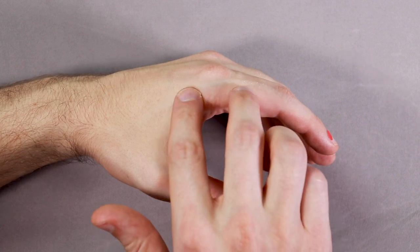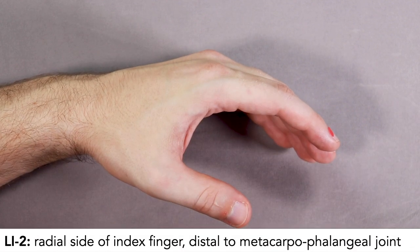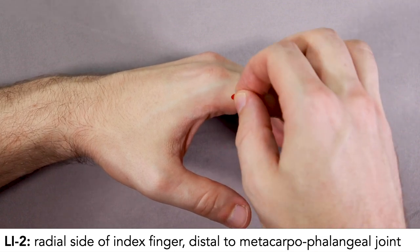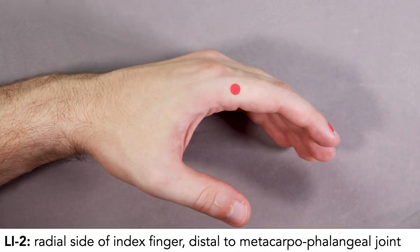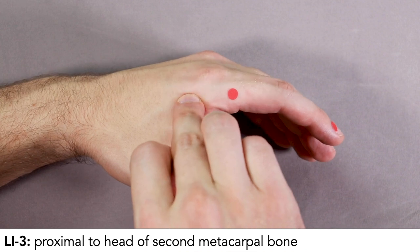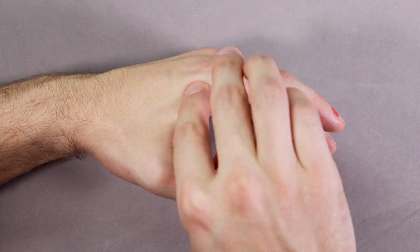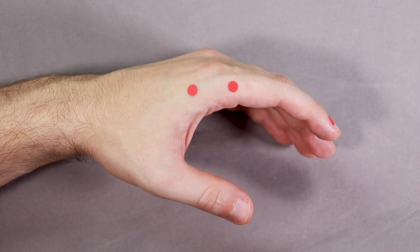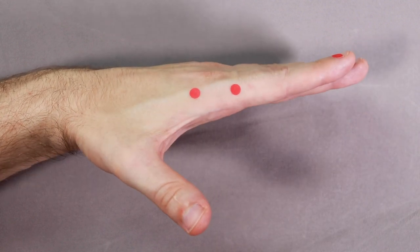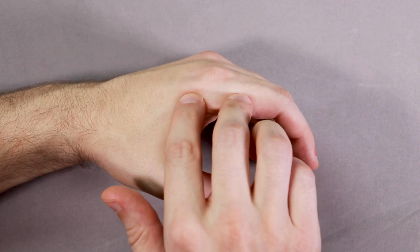LI2 and LI3 are on either side of the metacarpophalangeal joint. LI2 is just distal to the joint on the radial border of the bone. LI3 is in the depression just proximal to the head of the second metacarpal bone. These points might be a little bit difficult to feel if the fingers are straight, so relax the fingers and these depressions will open up.